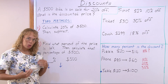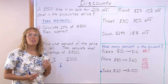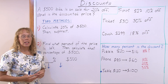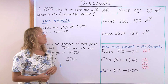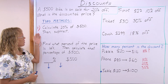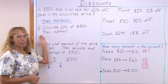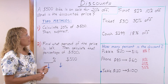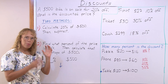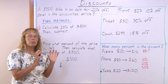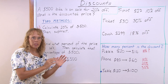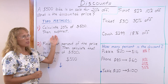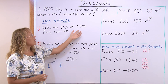Now, there are two basic methods for calculating discounted prices. The first method is that we first calculate 20% of $500 — that is the part of the price that's going to be taken off — and then we subtract that from the $500.